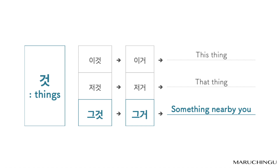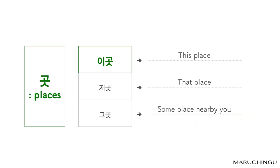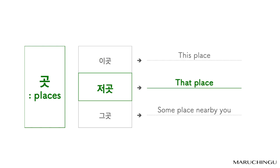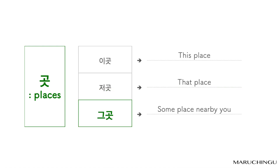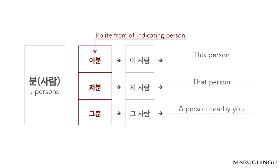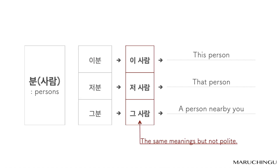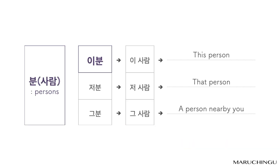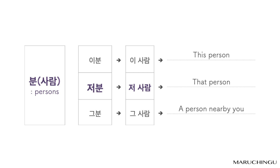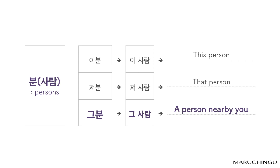이곳 means 'this place,' 저곳 means 'that place (far),' 그곳 means 'some place nearby you.' 이분, 저분, 그분 — both formal and informal forms share the same meaning but 이분/이사람, 그분/그사람 describe persons with different levels of politeness. 그사람 means 'person nearby you.'